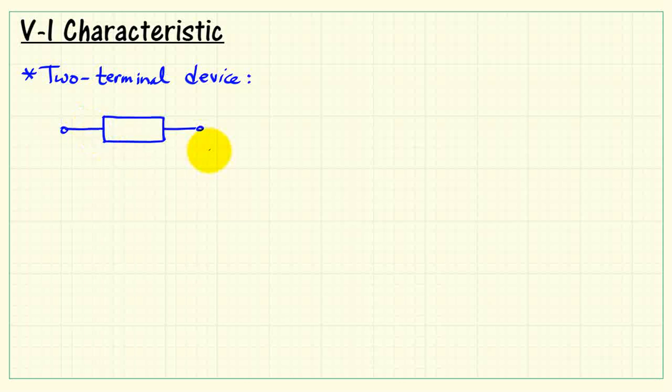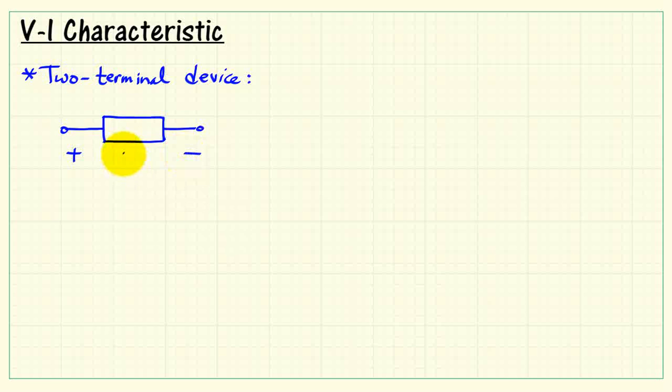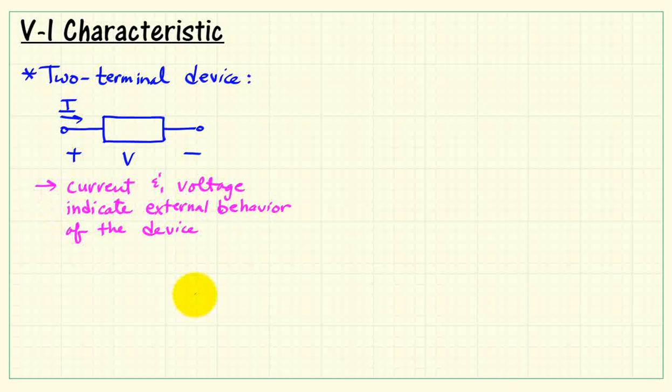Now let's take a look at some of the basic ideas of the V-I characteristic, or voltage-current characteristic, for a two-terminal device. We're showing a generic two-terminal device that would have a voltage across its terminals and a current passing through the device.